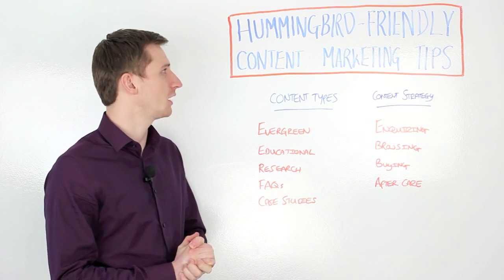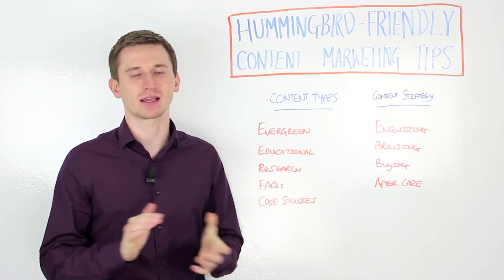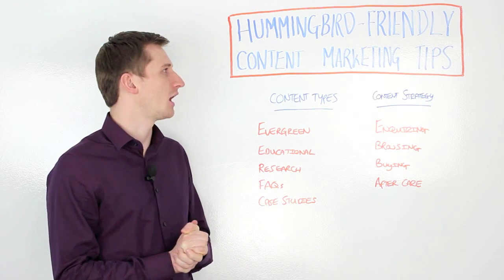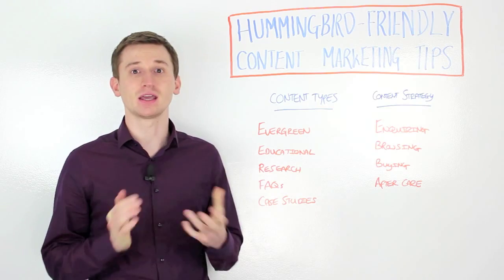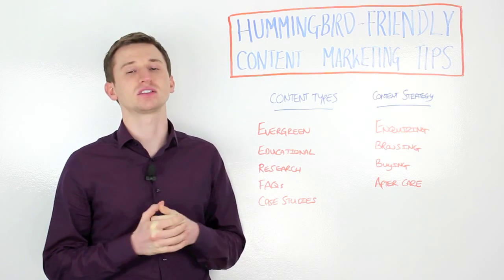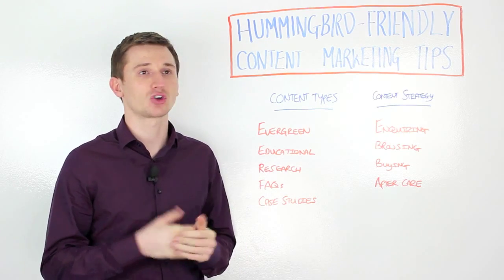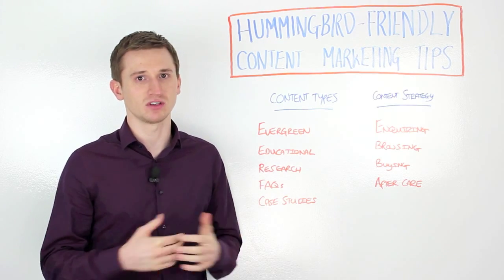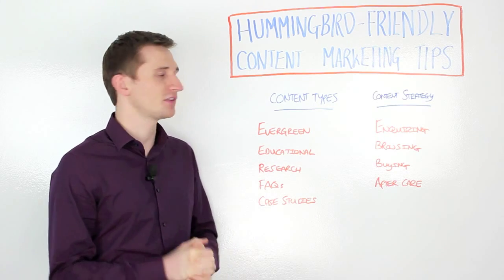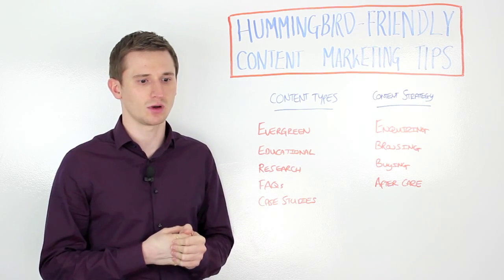Hummingbird was an algorithm update created back at the end of last year, and simply put, it enables Google to better understand concepts and complex search queries as opposed to just keywords. So what does this mean to us content marketers?